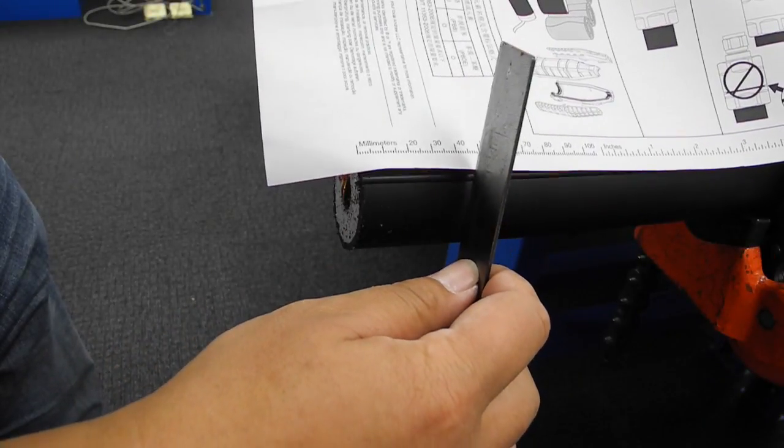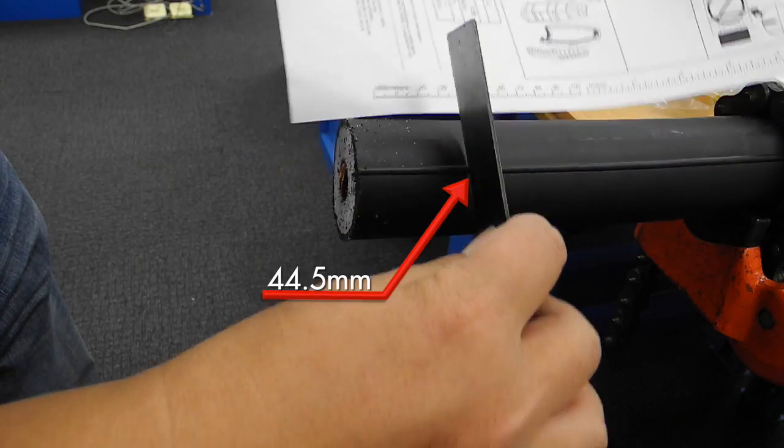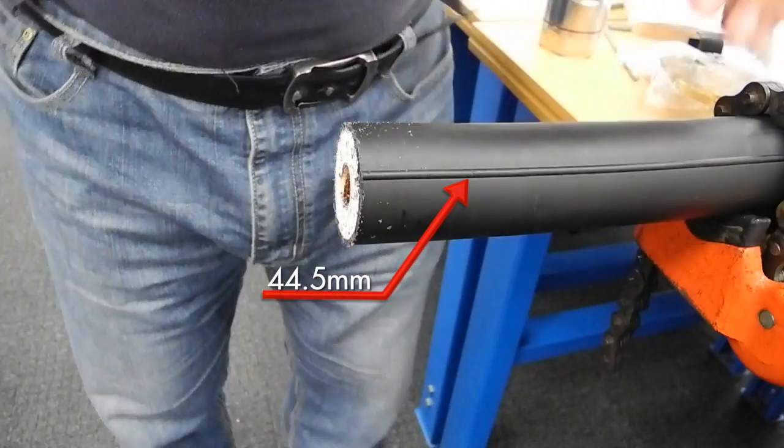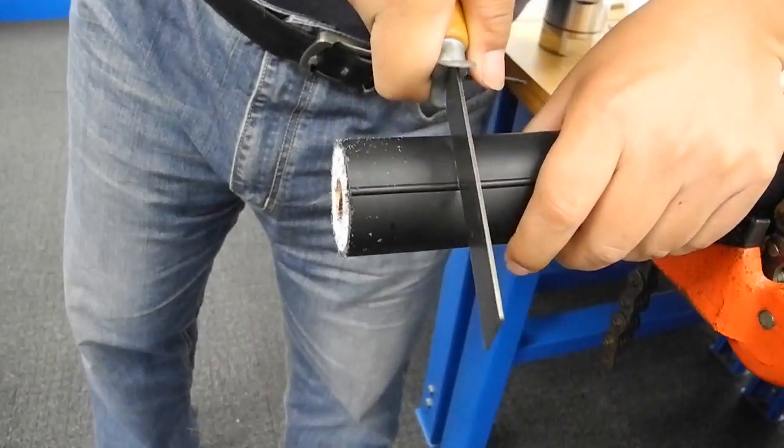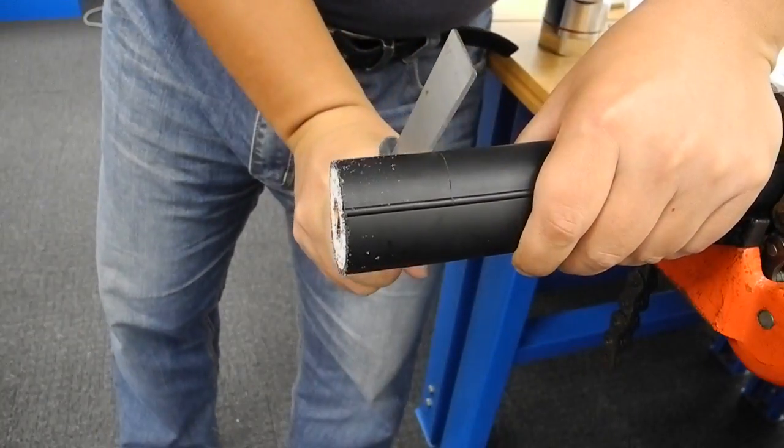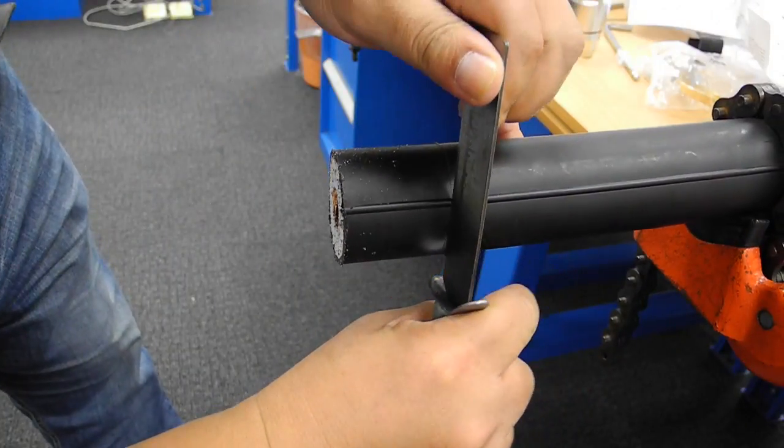Use the included guide to measure 44.5mm from the cable end. Score the jacket, taking care not to cut the copper foil. Then remove the jacket.